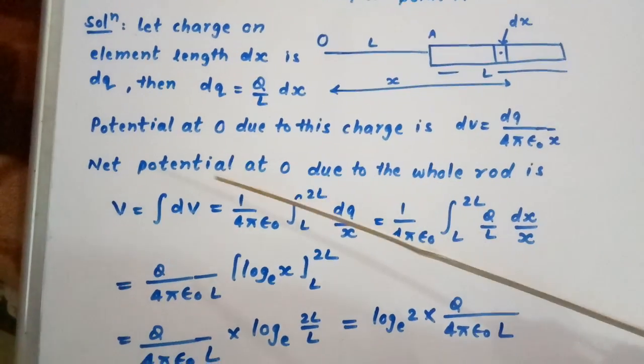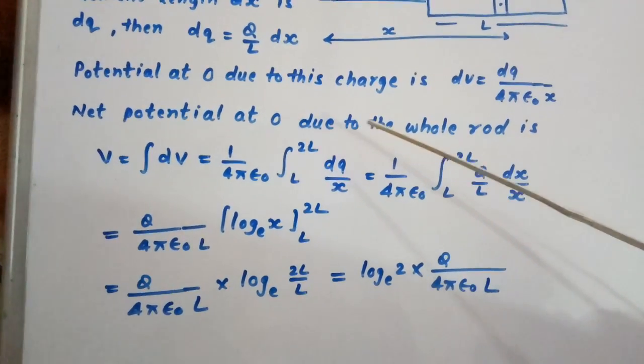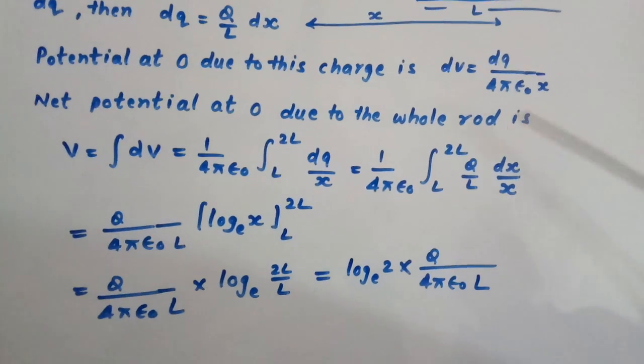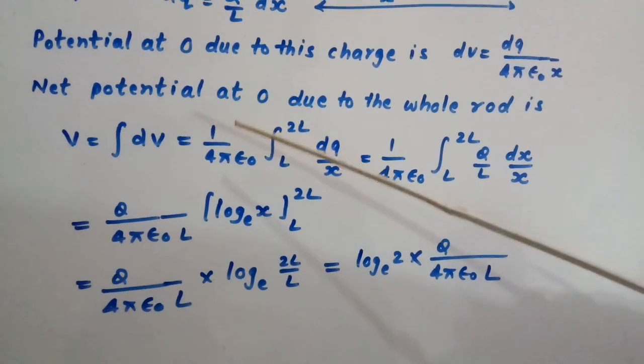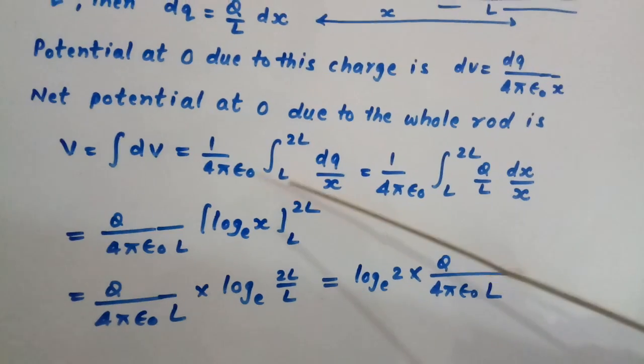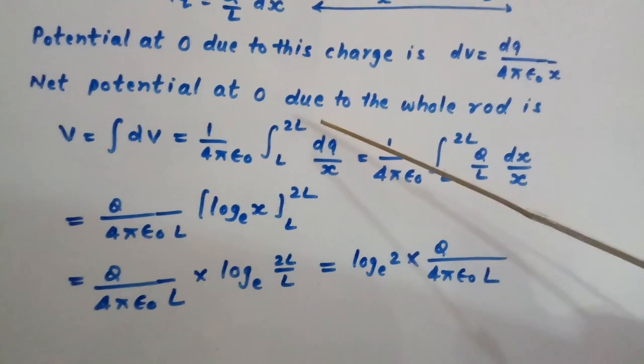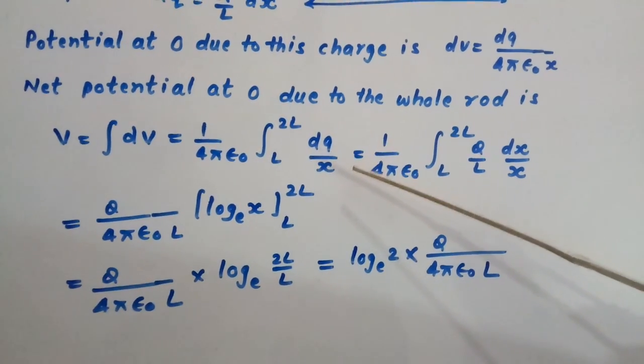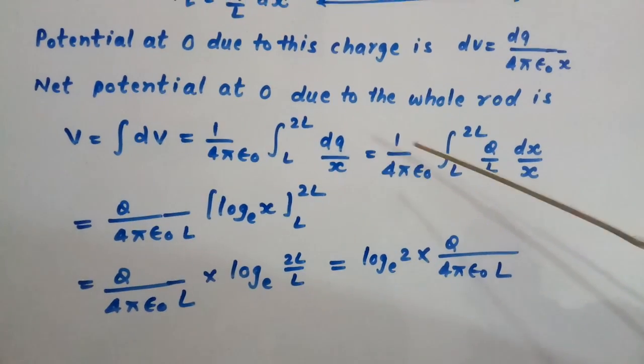Net potential at O due to the whole rod is given by V equals integration dV, which is equal to 1 upon 4πε₀, limit L to 2L, integration dq upon x. We put the value of dq as Q upon L dx.